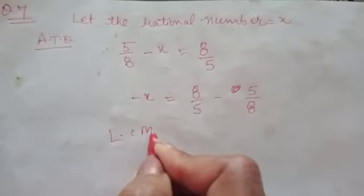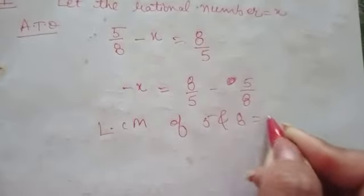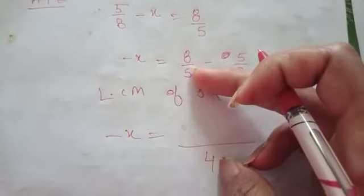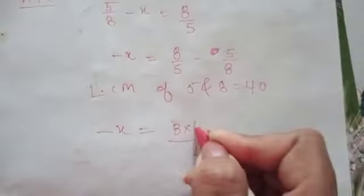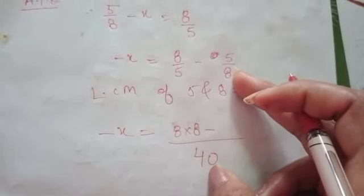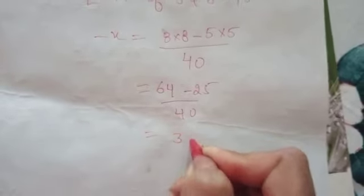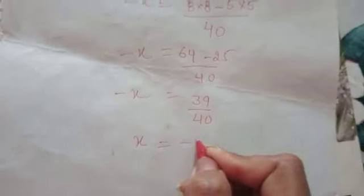Take the LCM of 5 and 8, it will be 40. Write down 40 here. Divide 40 with 5, you will get 8; 8 will multiply with 8. Minus — again 8 will divide the 40, you will get 5; 5 will multiply with 5. So you will get 64 minus 25 over 40, and after solving this you will get 39 over 40 — that is the value of minus x. But we have to find the value of x, so this negative sign will shift to the right side: minus 39 over 40 is the required answer.